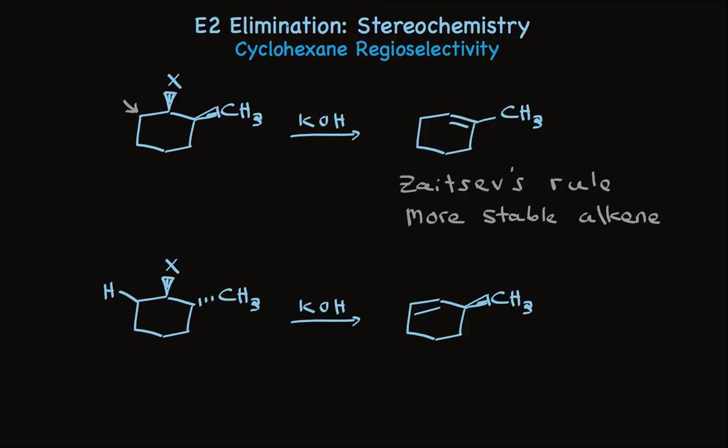The cis stereoisomer makes the expected, more stable alkene. But the trans stereoisomer doesn't. It makes the less stable alkene.